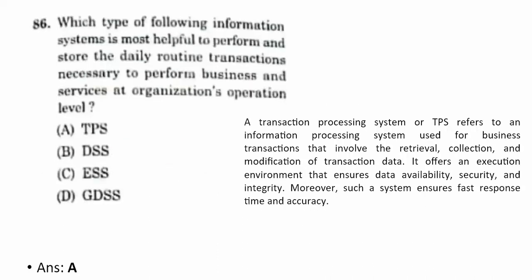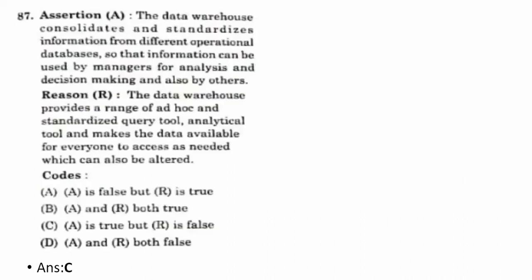Eighty-sixth question: which type of information system is most helpful in storing daily routine transactions at the organization's operational level? The correct answer is A — Transaction Processing System (TPS). TPS is an information processing system used for business transactions involving retrieval, collection, and modification of data; it ensures data availability, security, and integrity and is used for day-to-day transactions.